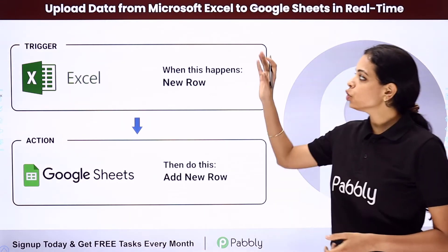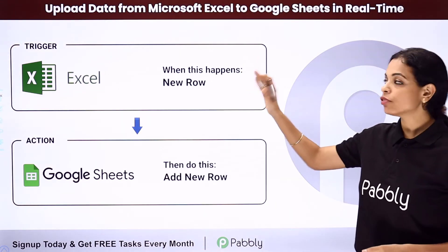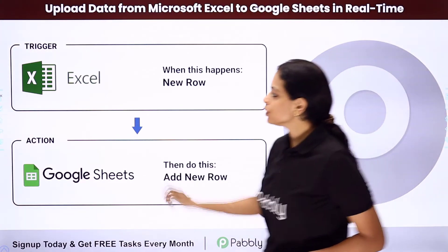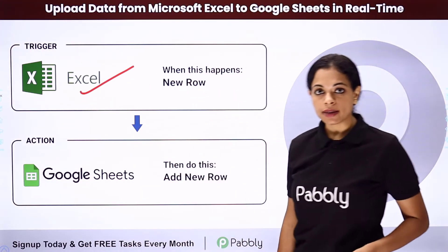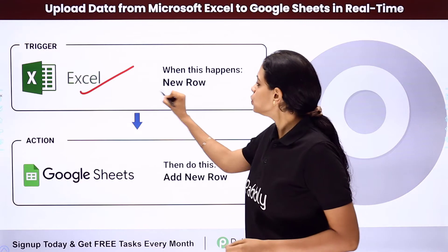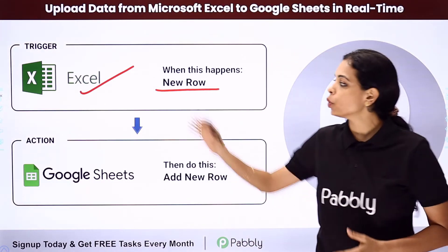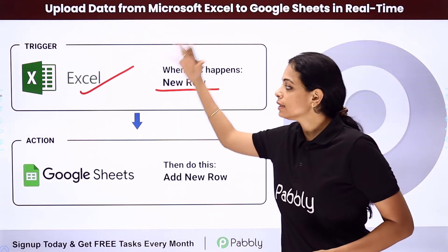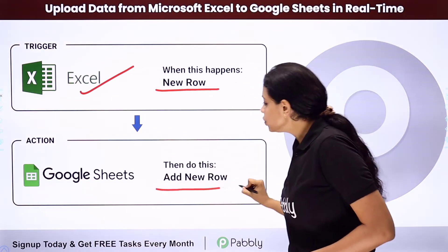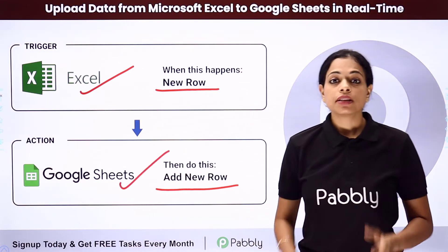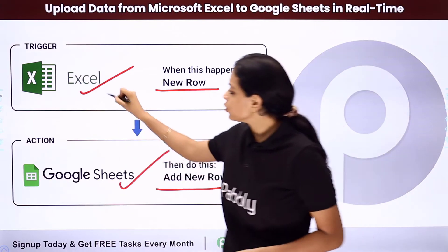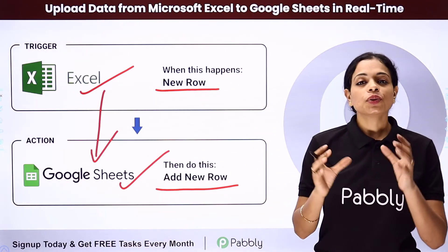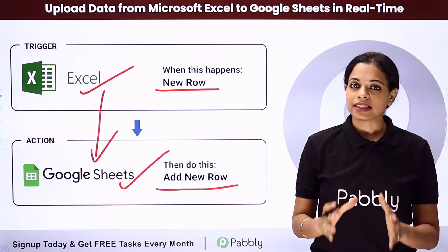In this video, we are going to see how to upload data from Microsoft Excel to Google Sheets in real time. So let's say you are using Excel as a spreadsheet software and you want that every time new data is added as a new row in the spreadsheet, automatically the same data should be added as a new row in your Google Sheets. For this, you will have to integrate these two applications, and you can do that with the help of Pabbly Connect software.